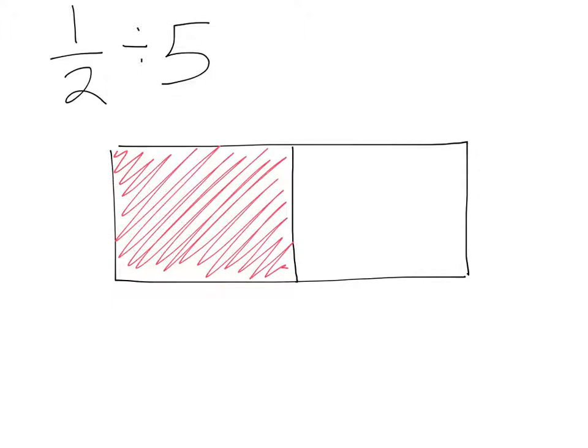So now I have, this first representation is kind of like columns. You can think of it as 1, 2 columns, and I shaded my 1 out of the 2. And now I want to make 5 rows. So I'm going to have to draw 4 lines. So 1, 2, 3, 4.